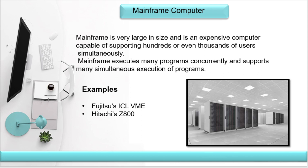For example, Facebook is an international company with customers all over the world. Data goes in and data goes out — lakhs of people are using Facebook at a time, uploading photos and sharing information. Most of the time this information is stored on mainframe servers, which have high speed and large storage capacity.